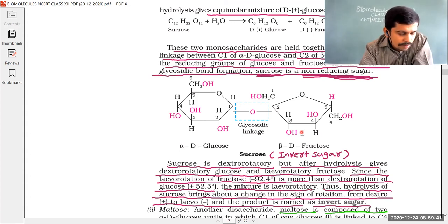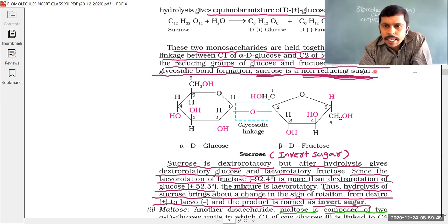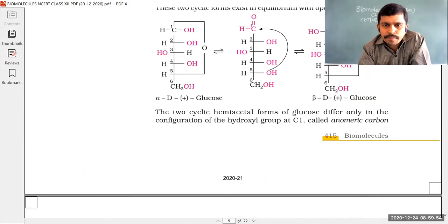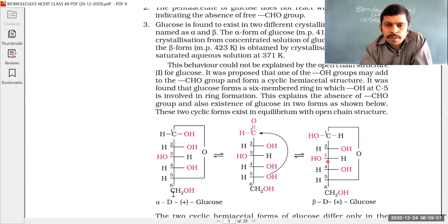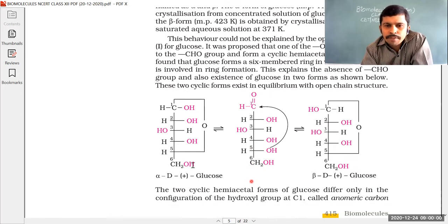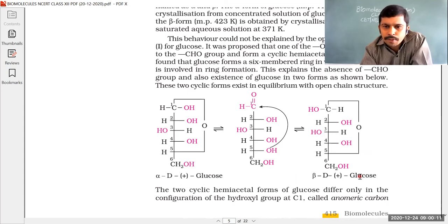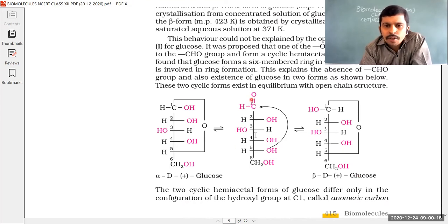Question 20: D+ glucose reacts with hydroxylamine to yield an oxime. We need to find the structure of the oxime. First, let's look at the open chain structure of D+ glucose. The alpha and beta D+ glucose anomeric forms are interconvertible cyclic forms, but we will use the open chain structure of D+ glucose.